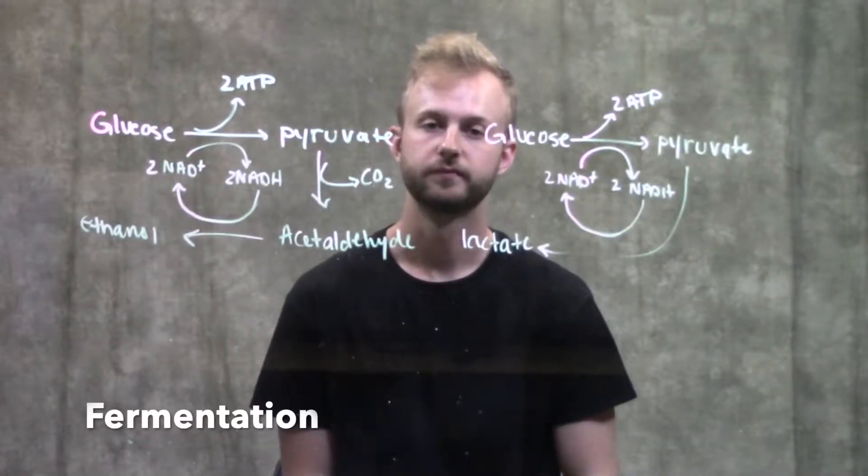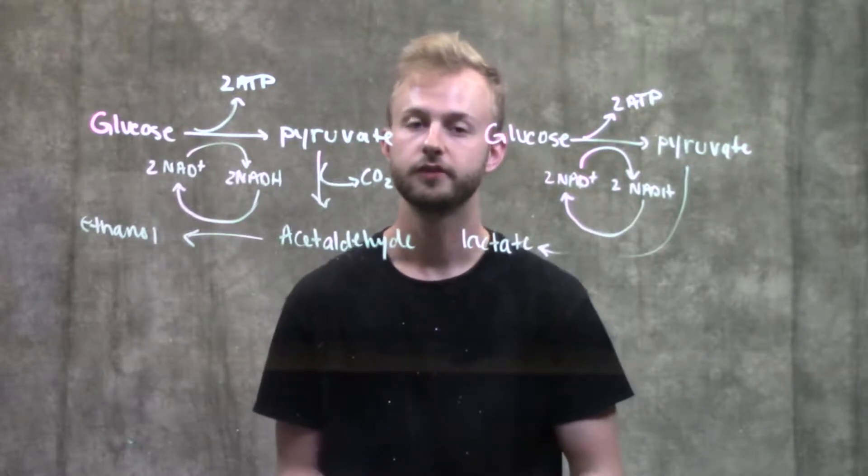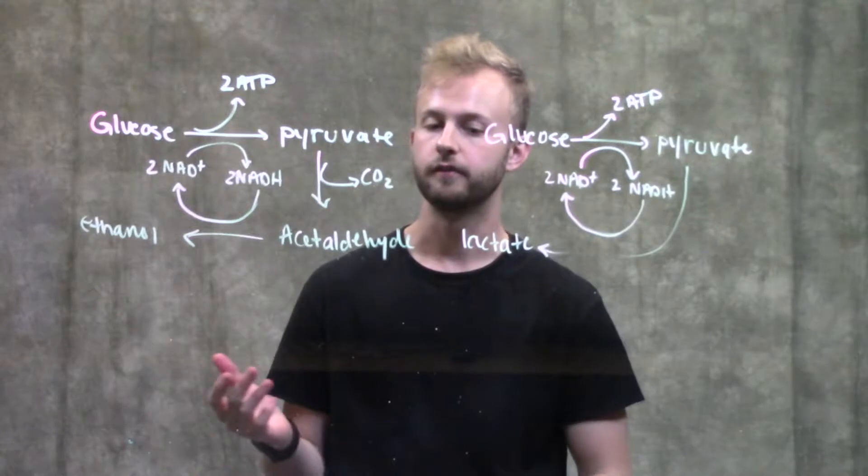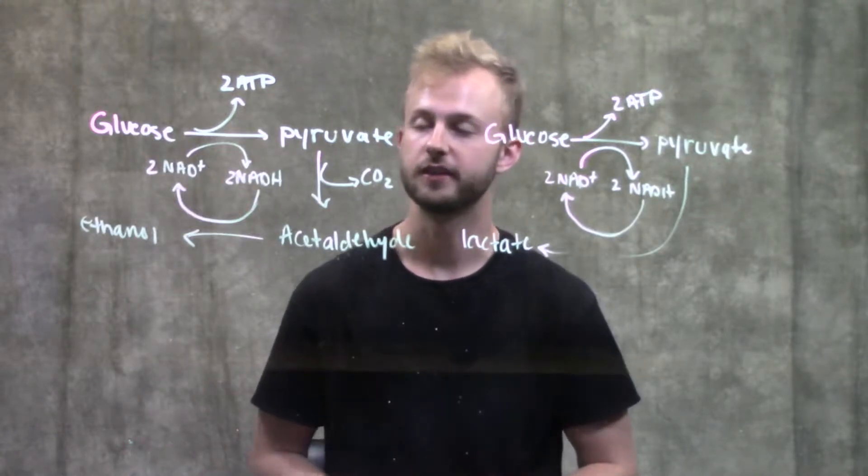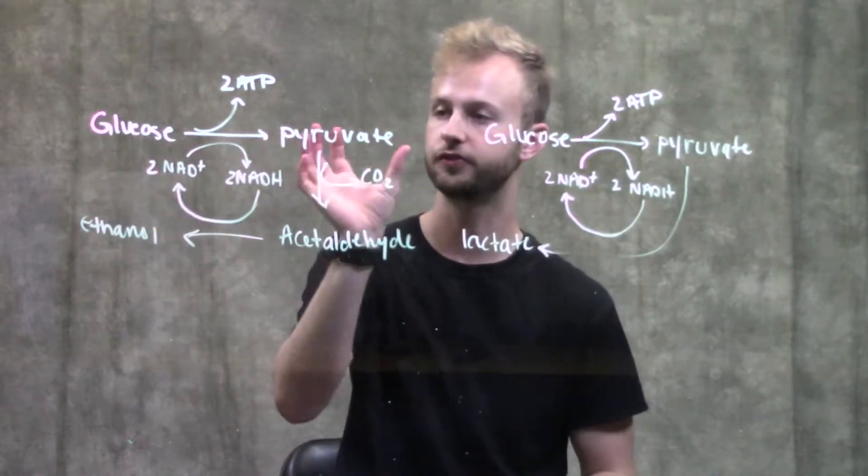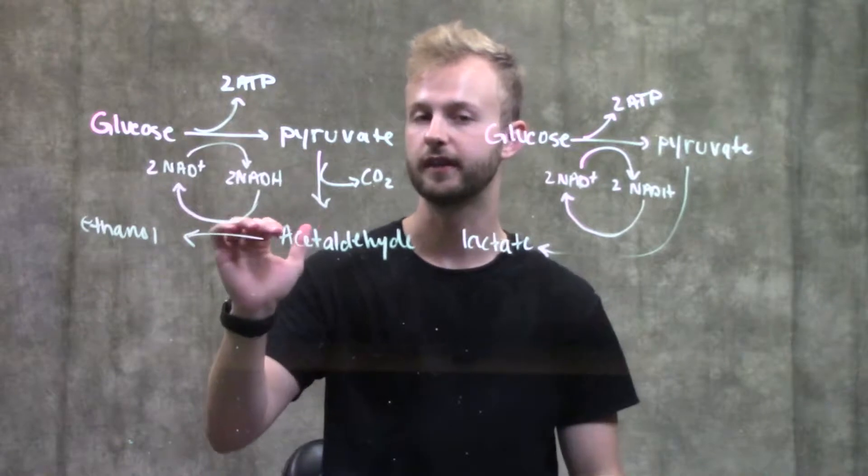This video is about fermentation. Fermentation takes place when our cells don't have oxygen available for aerobic cellular respiration. The first step of either of the two kinds of fermentation is glycolysis. Glycolysis produces two molecules of pyruvate as well as two molecules of ATP and two NADH.